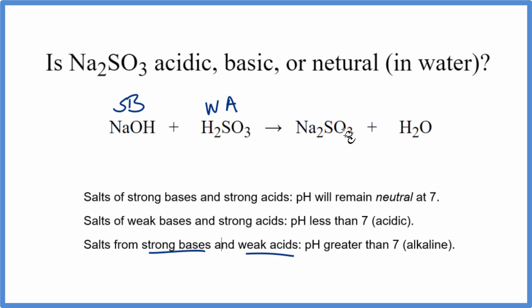Na2SO3, the pH is going to be greater than 7. That means it's going to be alkaline or basic. So when we put Na2SO3 in water, we end up with a basic or alkaline solution.